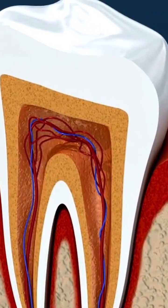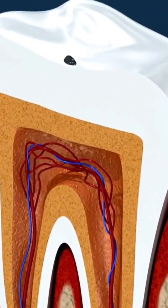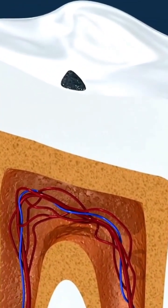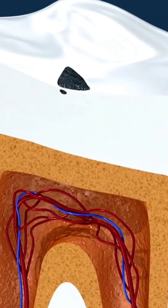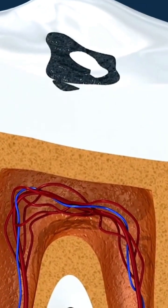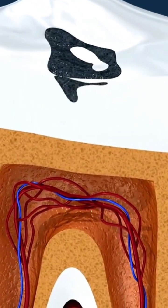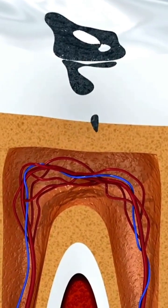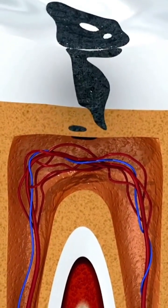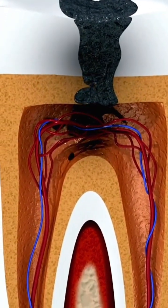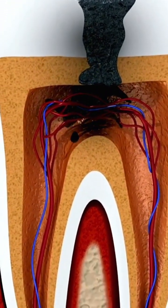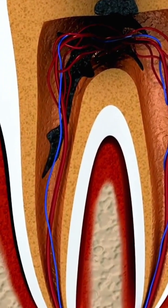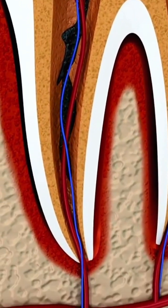Did you know that an infection in the root canal system can happen without any signs or symptoms? The root canal is made up of blood vessels, nerves, and connective tissue, which can become inflamed or infected. A root canal infection happens when germs from the mouth reach the tooth pulp.